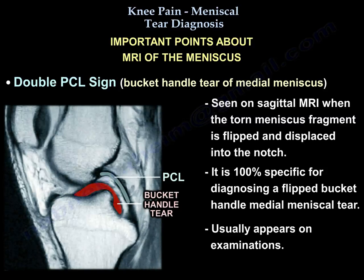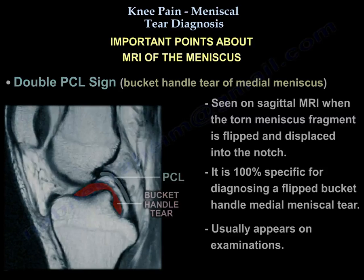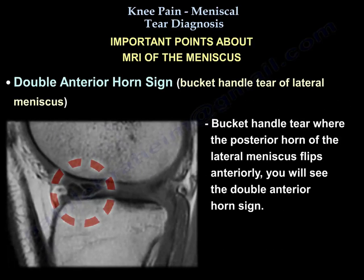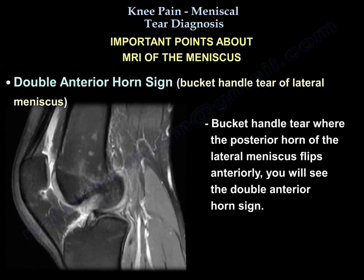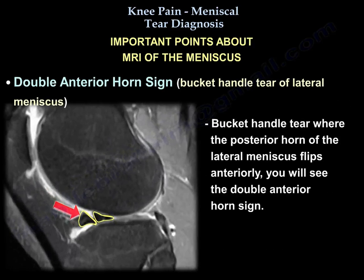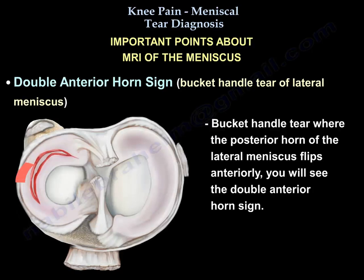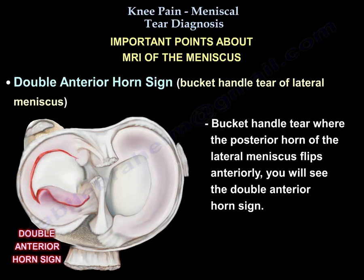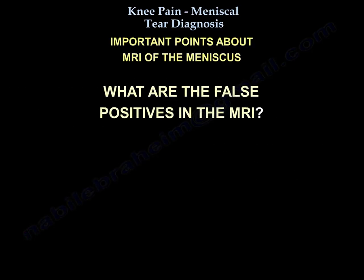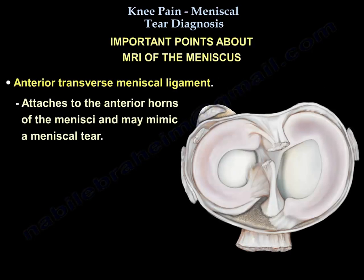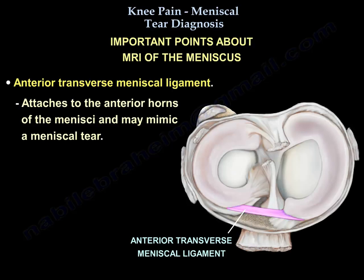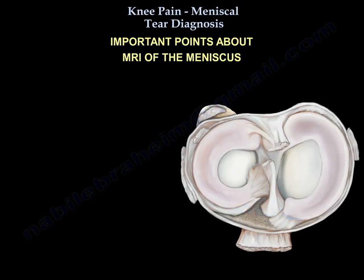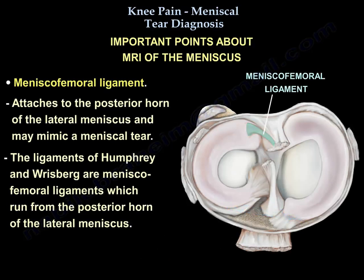The double PCL sign is 100% specific for a flipped bucket handle medial meniscus tear. For a bucket handle tear of the lateral meniscus, where the posterior horn of the lateral meniscus flips anteriorly, you see a double anterior horn sign. There is also a ligament called the anterior transverse meniscal ligament, which attaches to the anterior horn of the lateral meniscus and mimics a meniscus tear. There is also a meniscofemoral ligament attached to the posterior horn of the lateral meniscus that also mimics meniscal tear — it is the Humphrey or Risberg ligament.